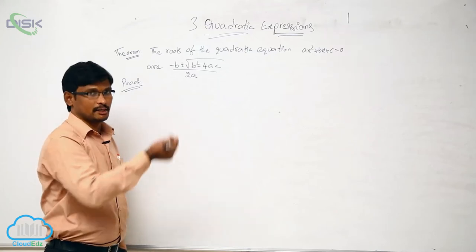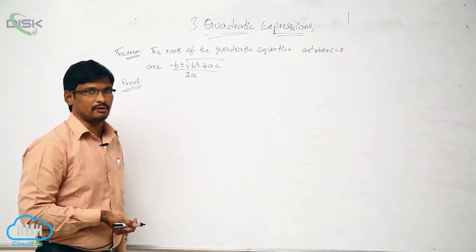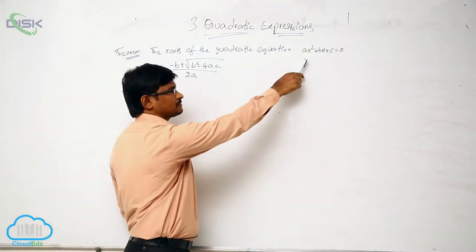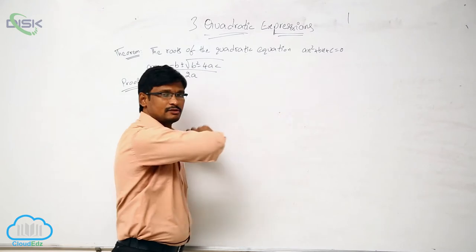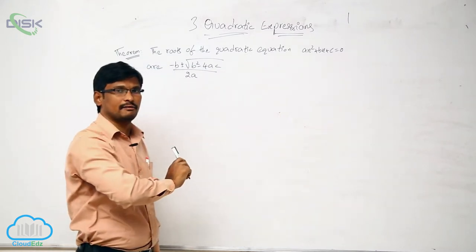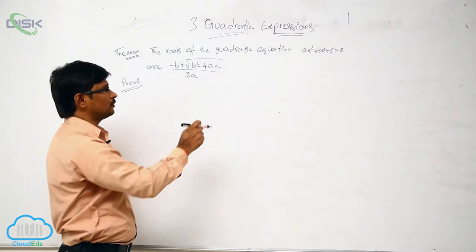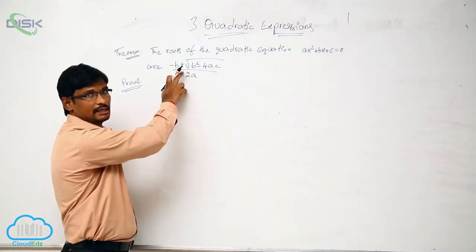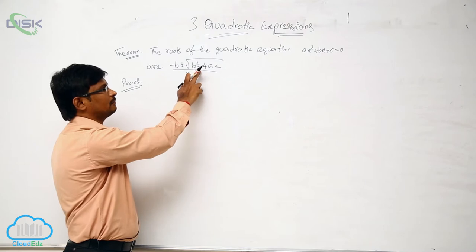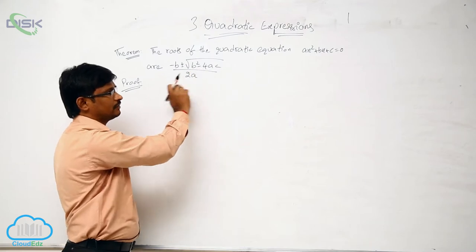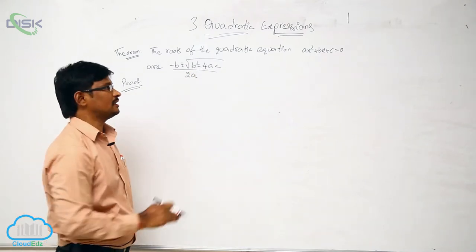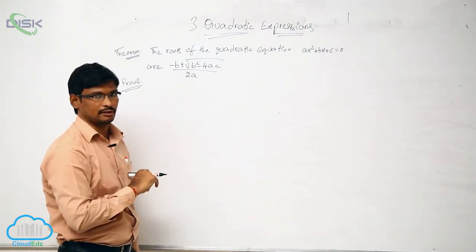Roots of quadratic equation — how to find them? The quadratic equation Ax² + Bx + C = 0 has roots given by minus B plus or minus the square root of B² minus 4ac, all divided by 2a. Let us see how to find it.